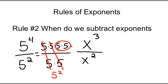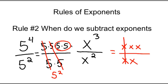In this case we have x times x times x for x to the third, divided by x times x for x squared. Again, x divided by x is 1, x divided by x is 1, and so you're left with just x to the first power.